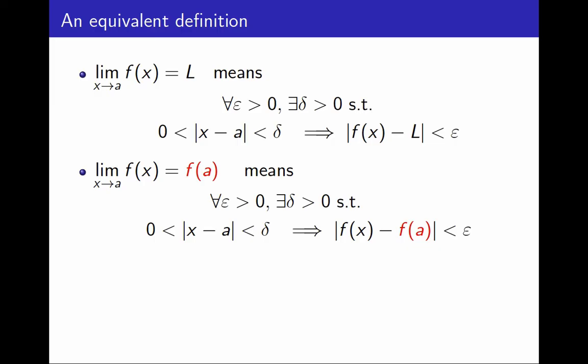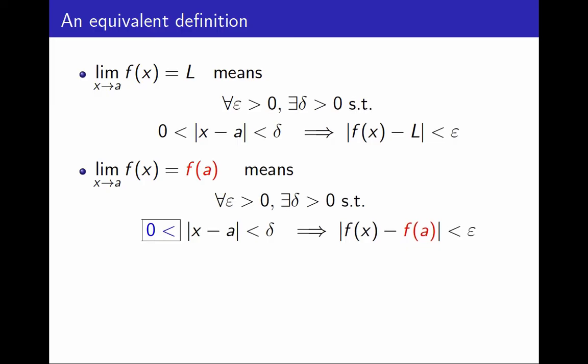And now we can do a simplification. In the definition of limit, we must exclude the case x equals a, because we don't even care whether the function is defined at a. But when we want continuity, the function must be defined at a, and the limit must be f(a). So we no longer need to exclude x equals a. This condition at the bottom, when we remove the exclusion x equals a, is entirely equivalent.